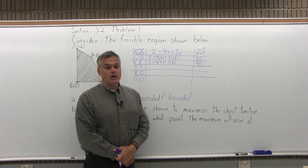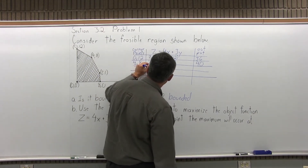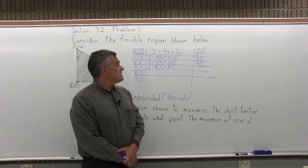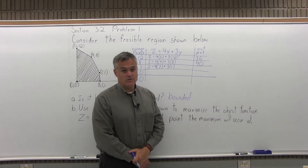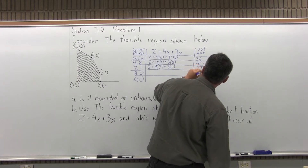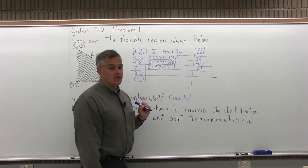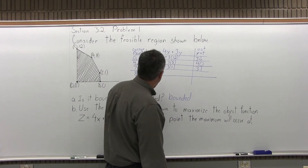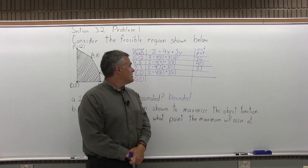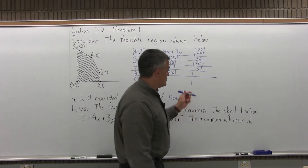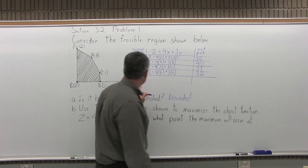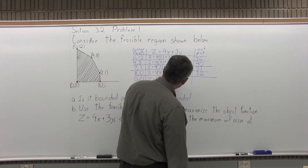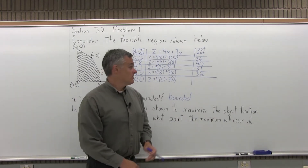The next corner point is (7,1): z equals 4 times 7 plus 3 times 1. So 4 times 7 is 28, 3 times 1 is 3, and 28 plus 3 is 31. The next corner point is (8,0): z equals 4 times 8 plus 3 times 0, which is 32 plus 0, giving an output of 32. And the last corner point, (0,0): z equals 4 times 0 plus 3 times 0, which is 0 plus 0, an output of 0.